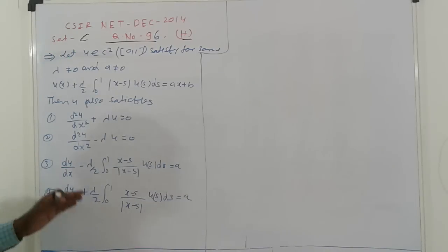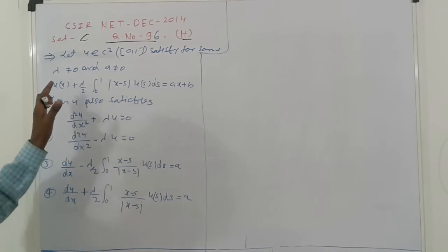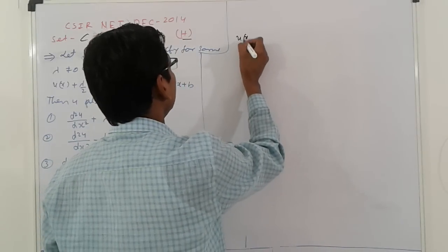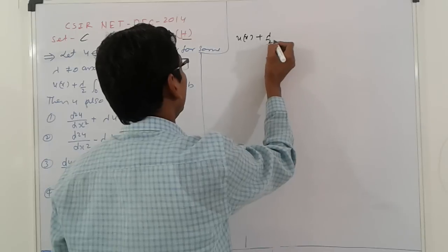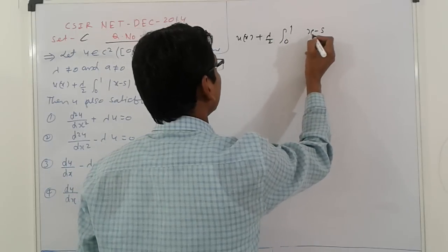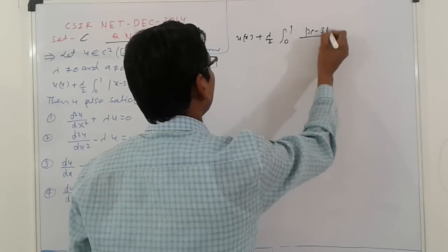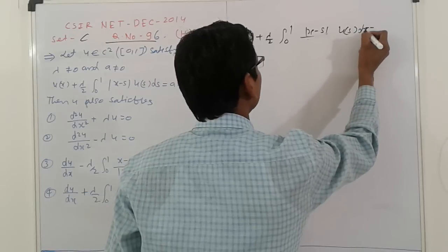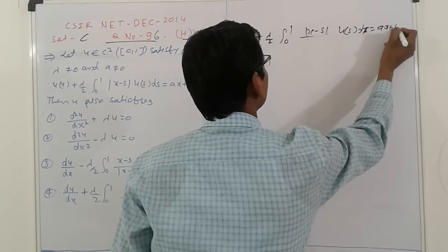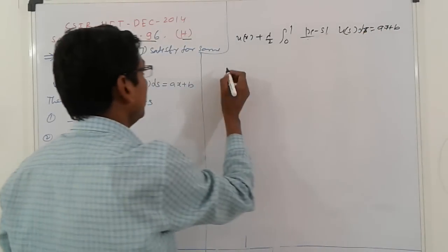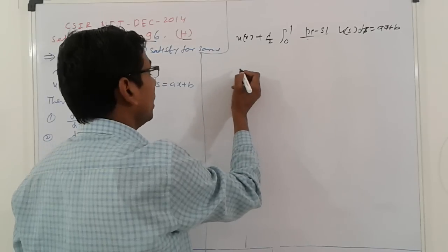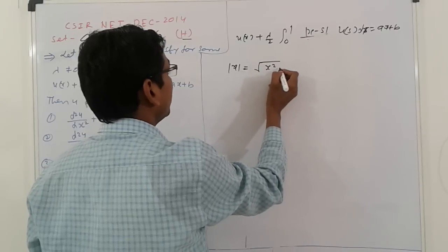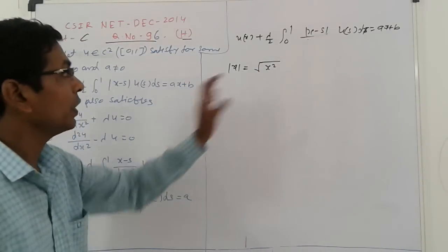So here, u(x) is given as: u(x) = x + λ/2 · ∫₀¹ |x - s| · u(s) ds = ax + b. The mod is given. The property of mod x is that |x| = √(x²).